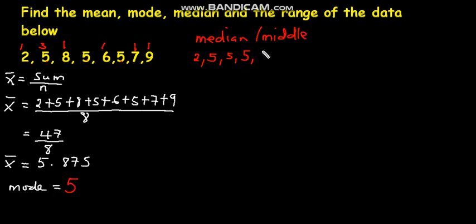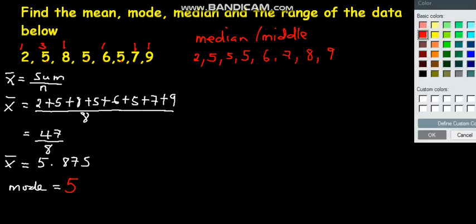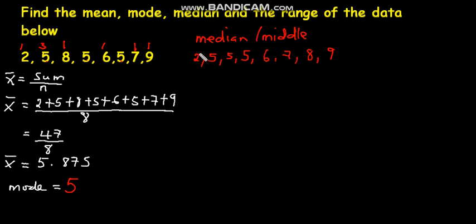6, then a 7, 8, finally a 9. Now from there, we shall cancel out or we shall rule out the numbers from the left and from the right. So from the left, we shall cancel out a 2. From the right, a 9. 5, 8. 5, 7. Now we found out that in the middle, we have two numbers.